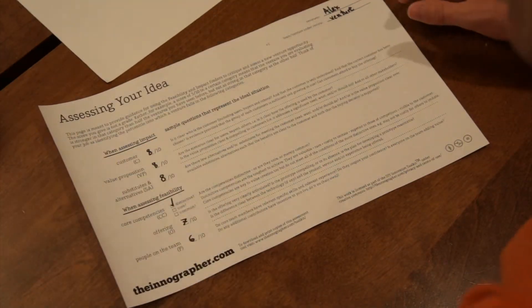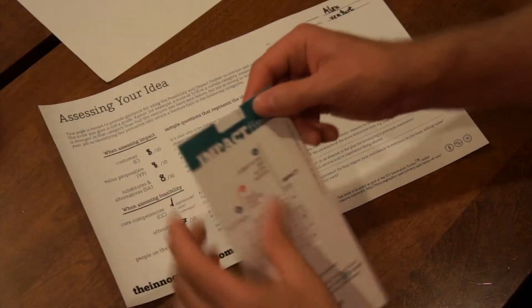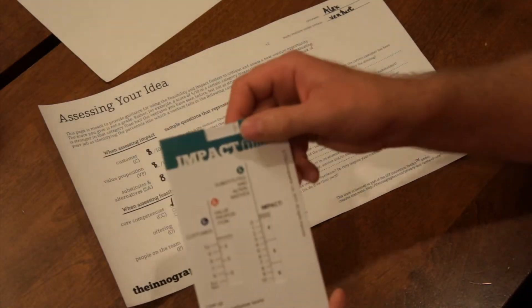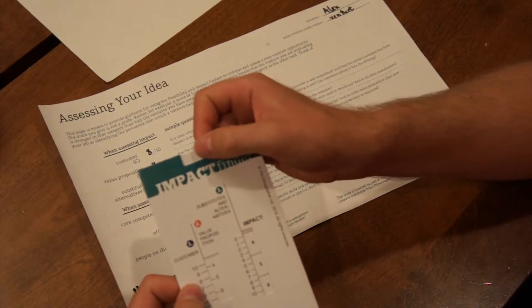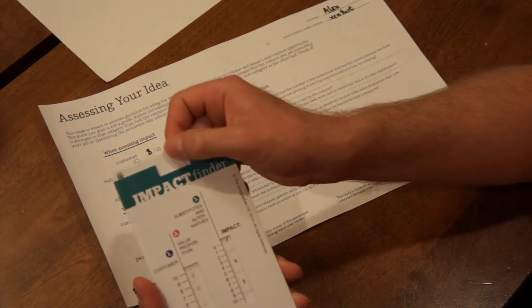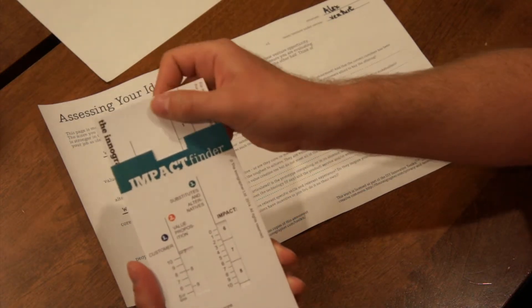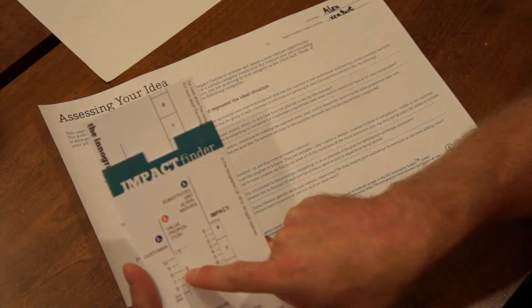So for example, if we look at the impact finder which I'll just put here and briefly demonstrate, if you had that customer score of eight and you have a value proposition of eight, then you line both of those up, such that the eight and the eight line up,